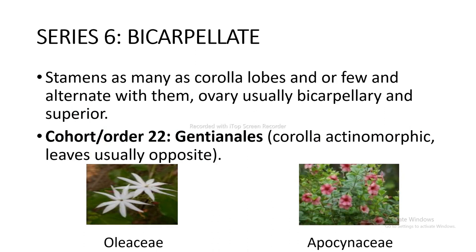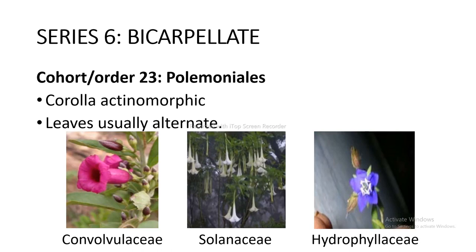Series 6 Bicarpellatae: stamens as many as corolla lobes or fewer, alternating with them; ovary usually bicarpellary and superior. Cohort and order 22 Gentianales — corolla actinomorphic, leaves usually opposite — includes Convolvulaceae, Solanaceae, and Hydrophyllaceae as shown in the figure.